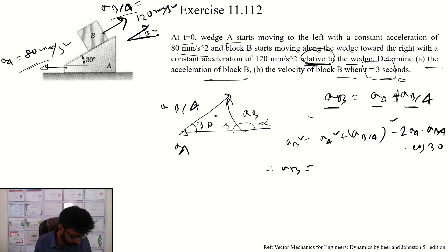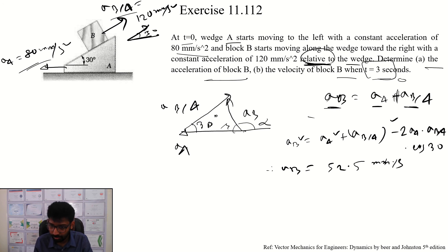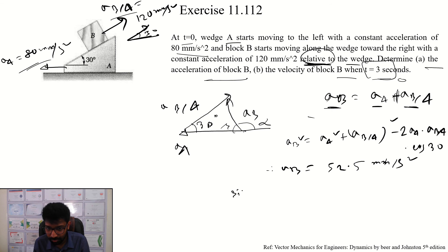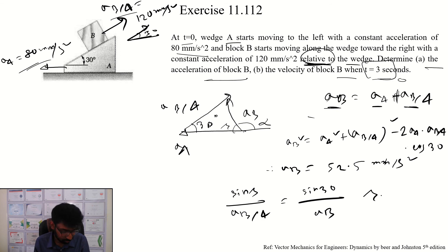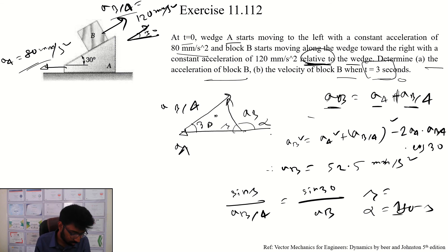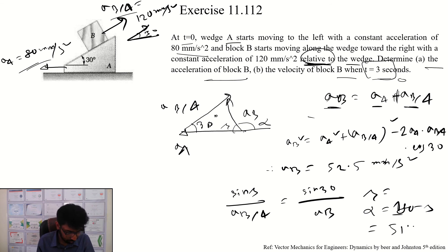So on our left we calculate v_B. Using the law of sines: sin(beta) divided by v_BA equals sin(30) divided by v_B. Solving this gives us the magnitude of v_B as 52.5 millimeters per second and the angle alpha equals 1.4 degrees.